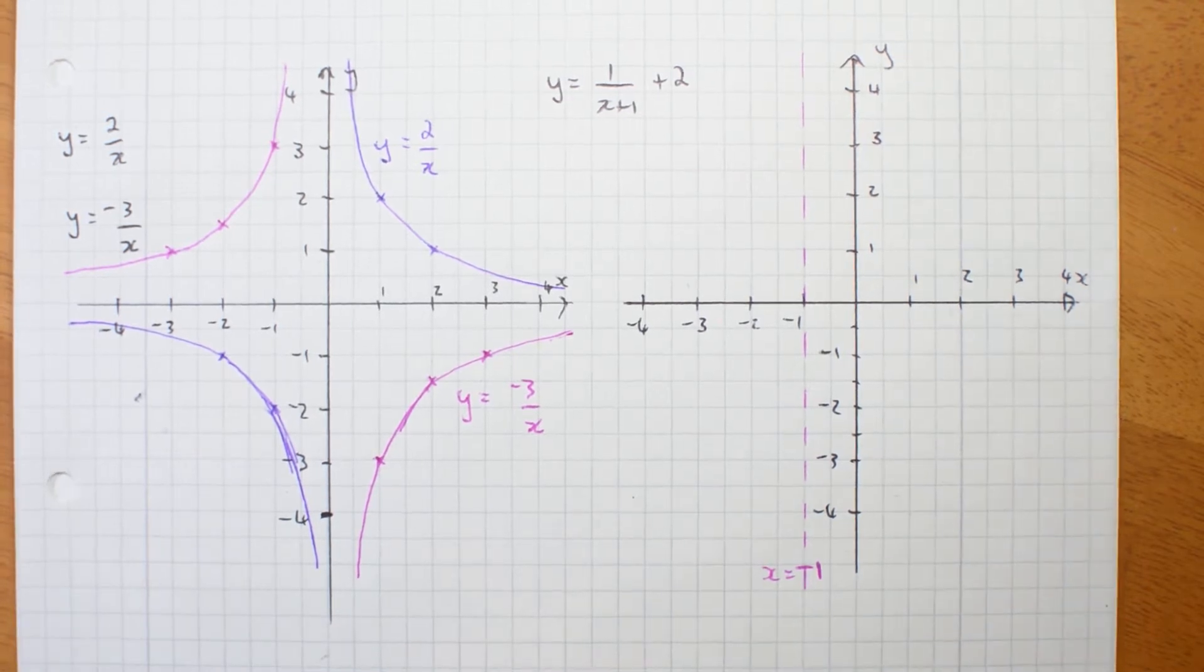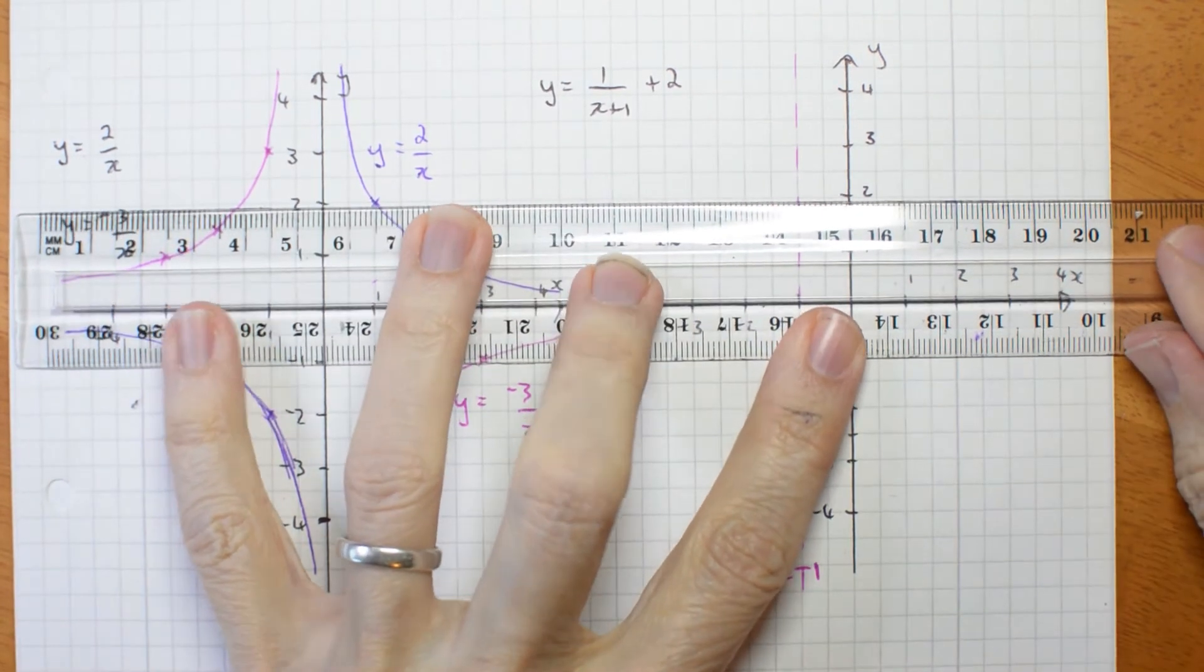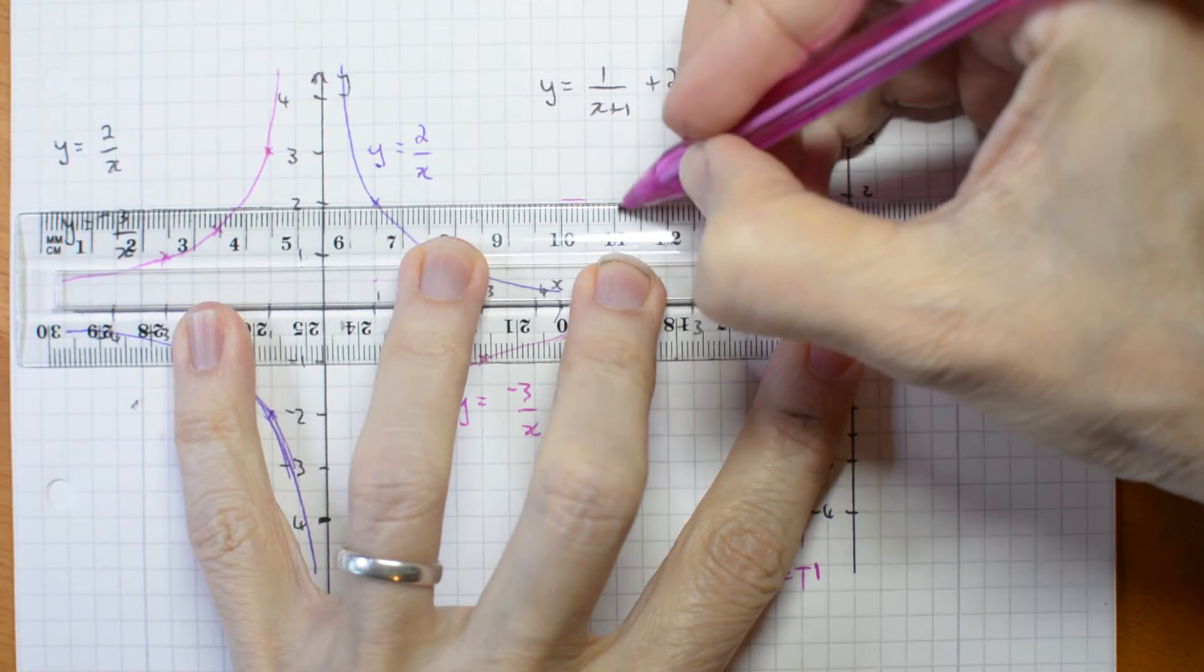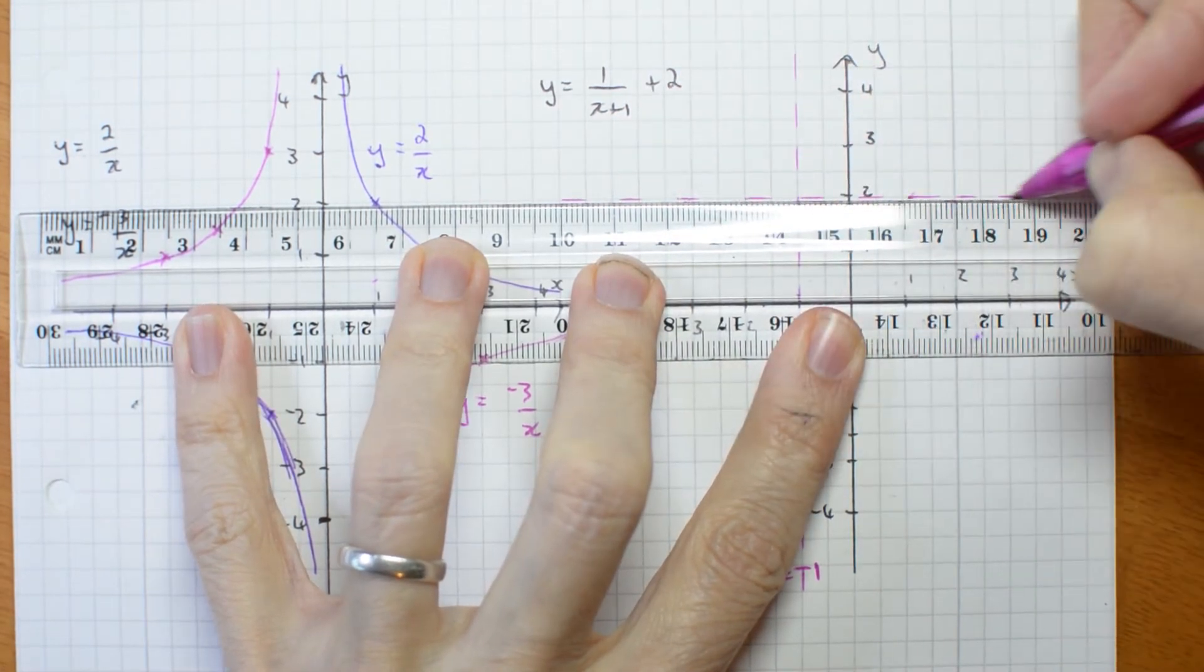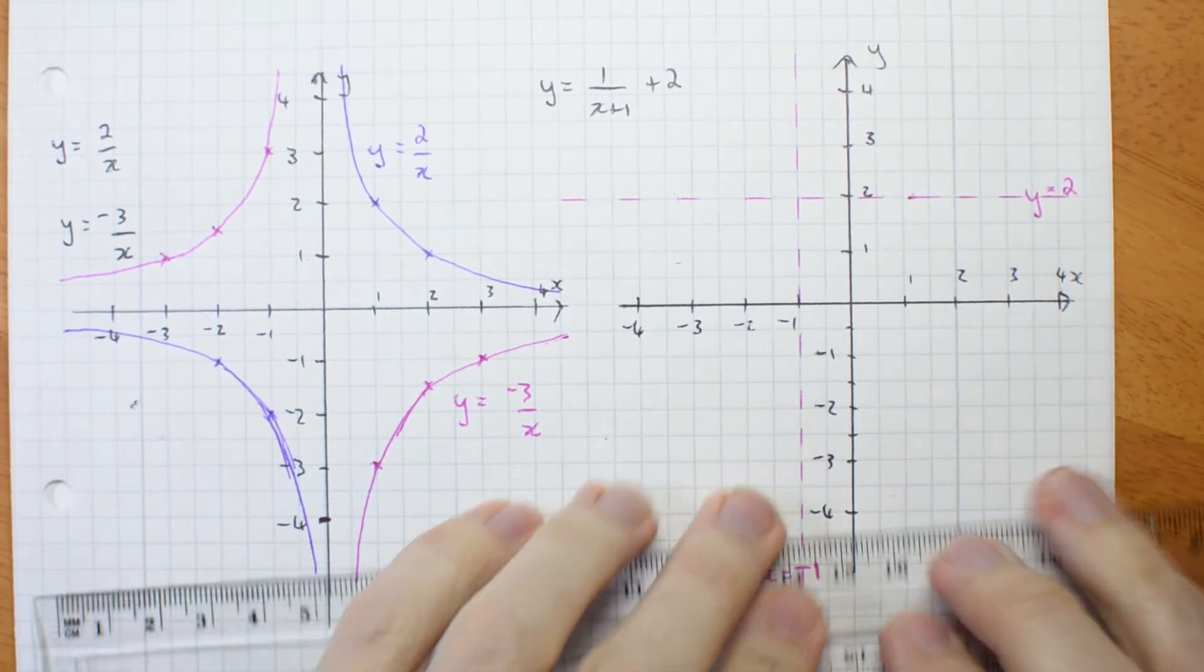The other asymptote has been shifted up 2, so it's here. y equals 2 is my other asymptote.